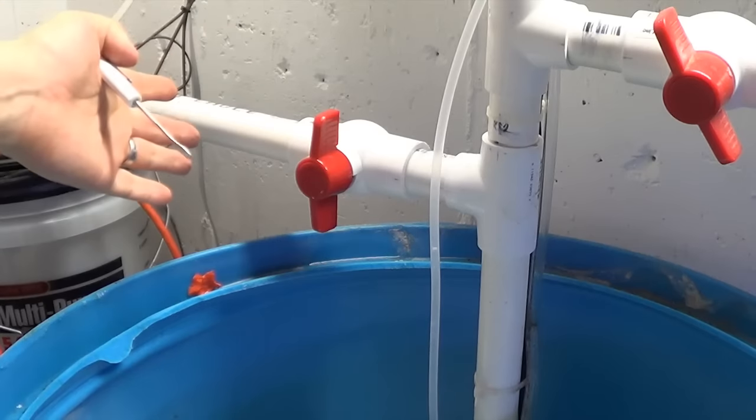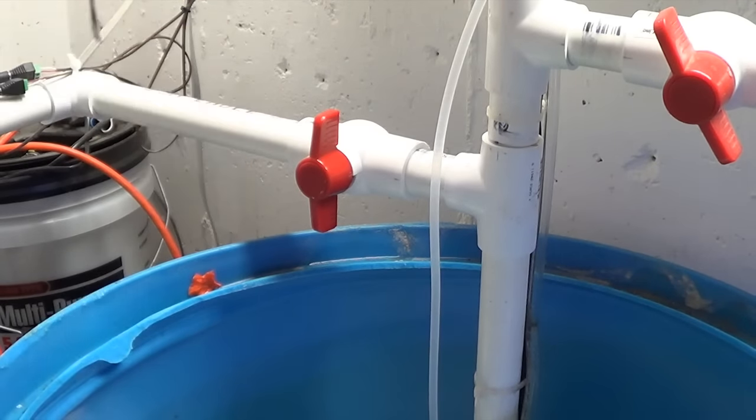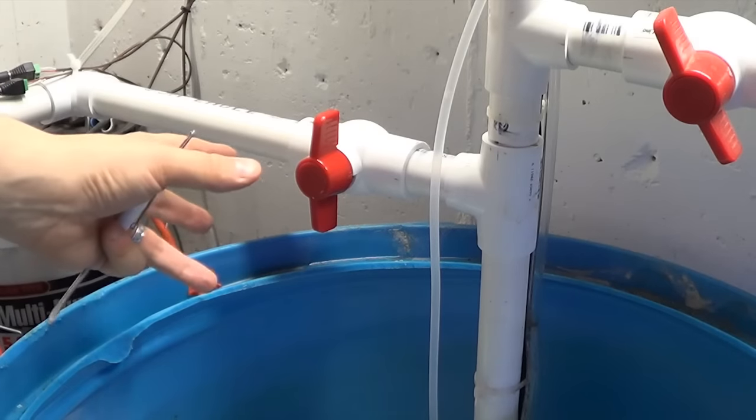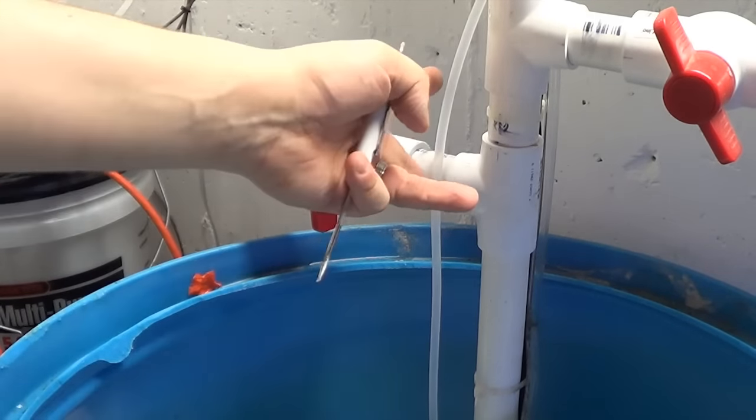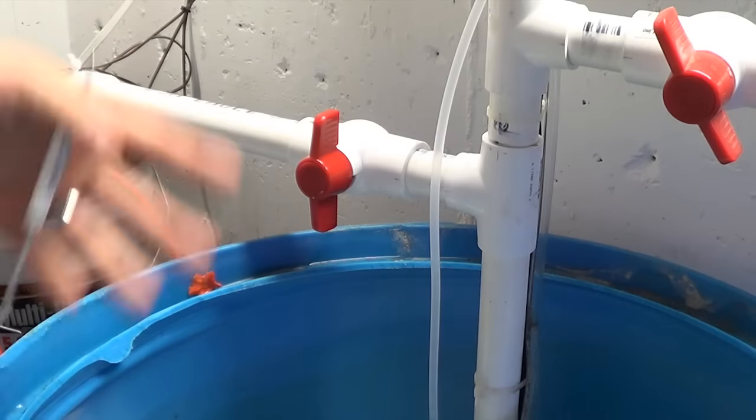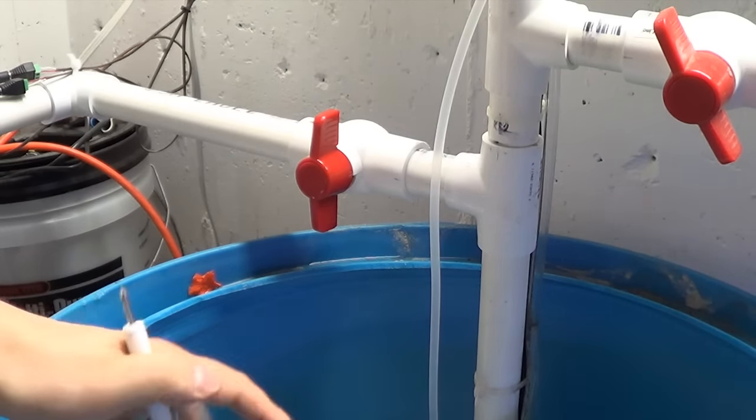Now when you have a setup like this where you've welded both sides of a ball valve and you have a problem with that ball valve, it's sort of annoying to have to replace the whole ball valve because you have to cut your PVC, weld a new one on, and it's kind of a pain in the neck because you have to shut your whole system down.